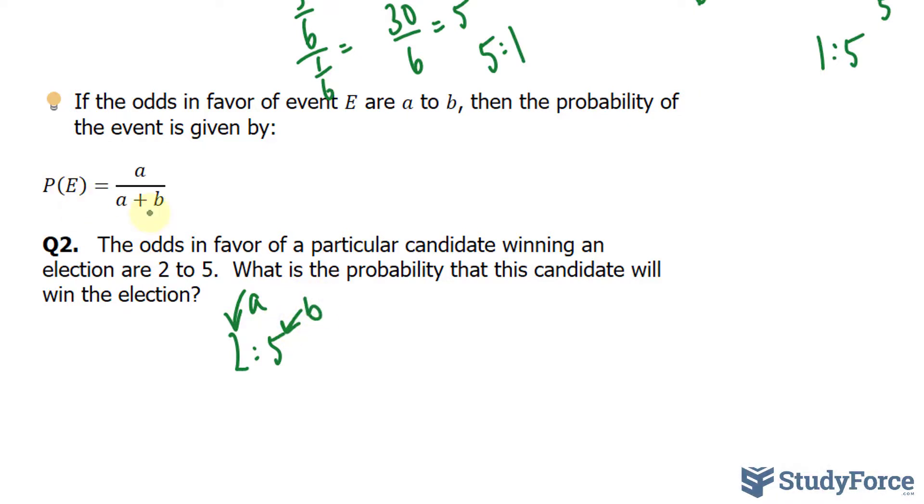And we'll use this formula, where we can find the probability by taking 2 and dividing it by the sum of the terms. 2 plus 5 is equal to 7. Therefore, the probability of this candidate winning is 2 over 7.